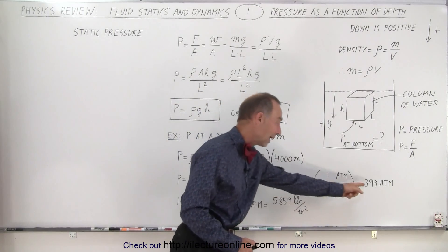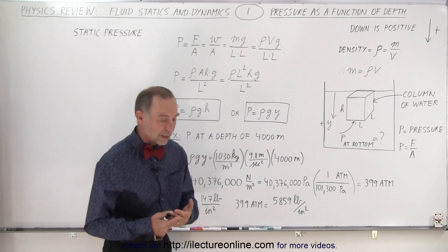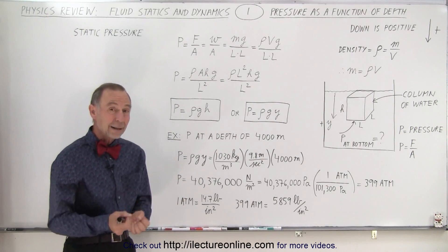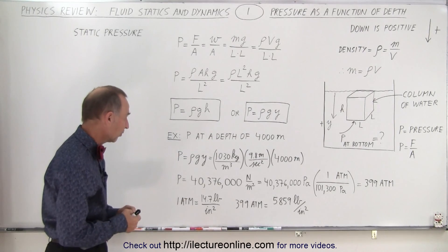Converting to atmospheres, we have 399 atmospheres. This means at 4,000 meters, the pressure is 399 times the atmospheric pressure at the surface.